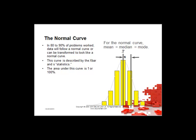In 80 to 90% of problems worked, data will follow a normal curve or can be transformed to look like a normal curve. The curve is described by the X-bar and S statistics, and the area under the curve is 1 or 100%. One of the reasons we compute statistics from sample data is to generate a picture of how the product or process operates. With a mean and standard deviation we can create the normal curve and use its properties to predict yields and defect levels. One of the properties of a normal distribution is that the mean is equal to the median and the mode.